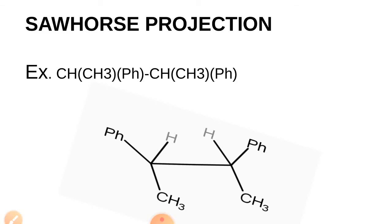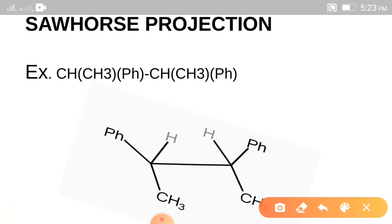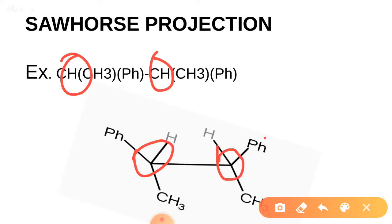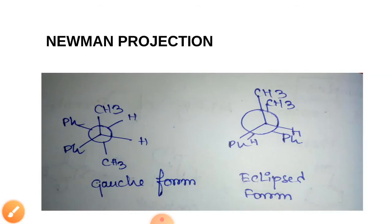If our compound is CH-CH2Ph-CH2Ph, then this is the flying wedge conformation. Here, this is one carbon and this is another carbon, where phenyl group, methyl group, methyl group, and hydrogen groups are attached. This is the Newman projection of that compound.